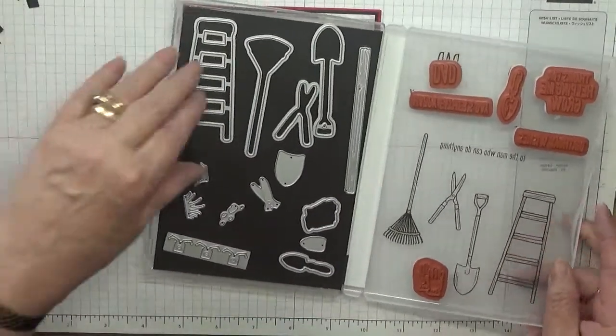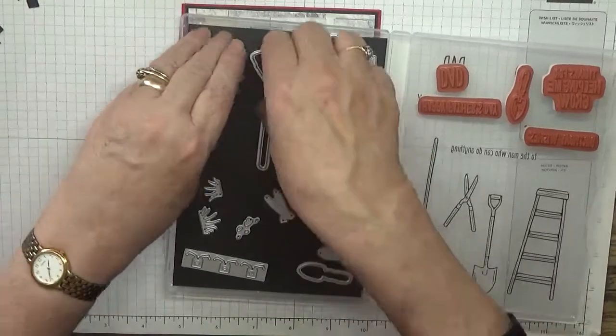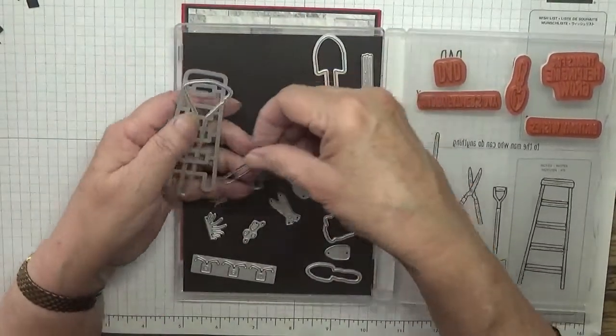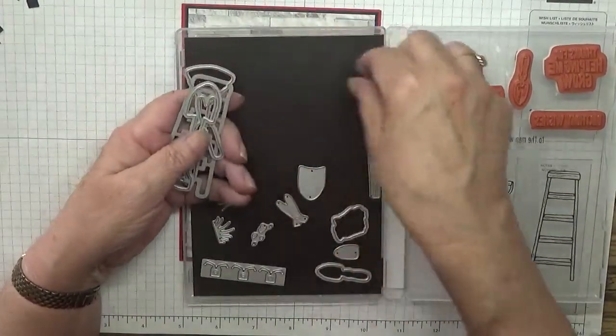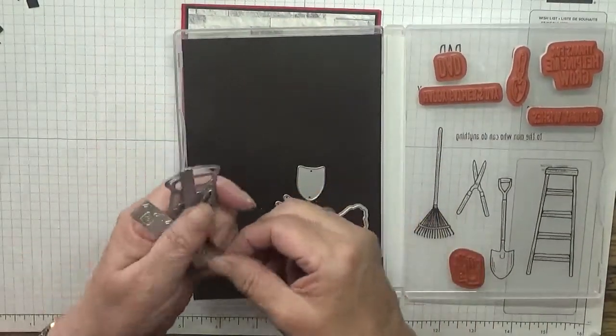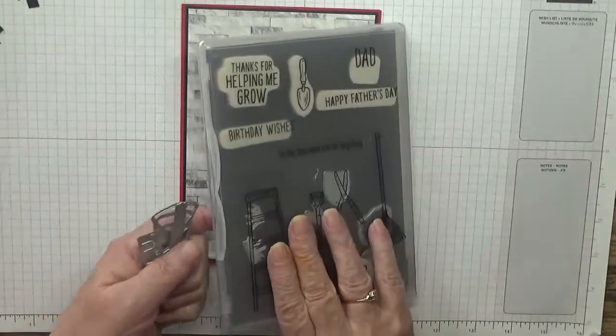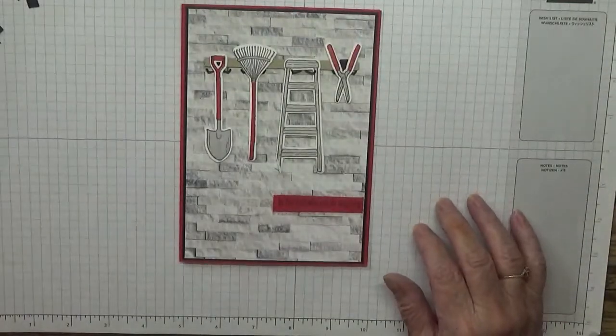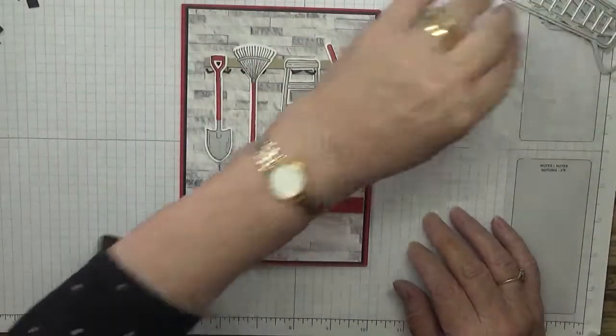Now the dies I'll need are the ladder, the rake, the shears, the spade, the plank of wood, and the hangers. I'll put them over there.